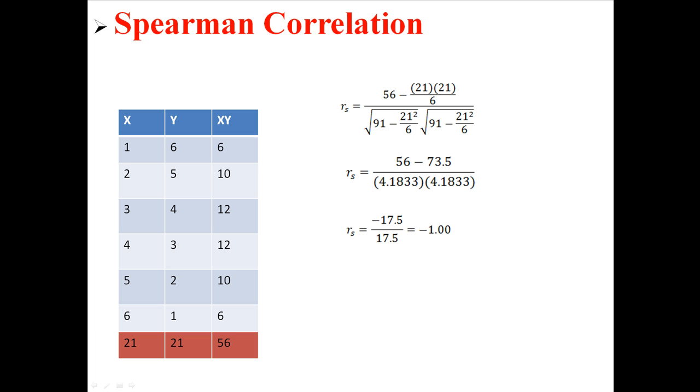Which believe it or not is negative 1.00. We have a perfect negative relationship, which should make sense looking at the x's and y's. Because every time x goes up 1, y goes down 1. That is a perfect negative relationship.